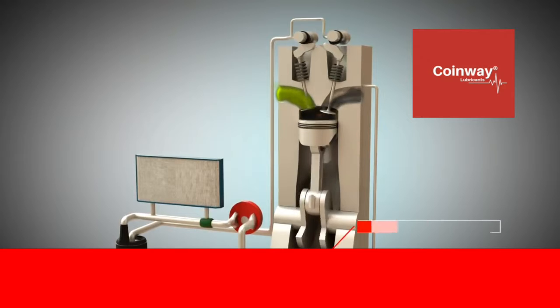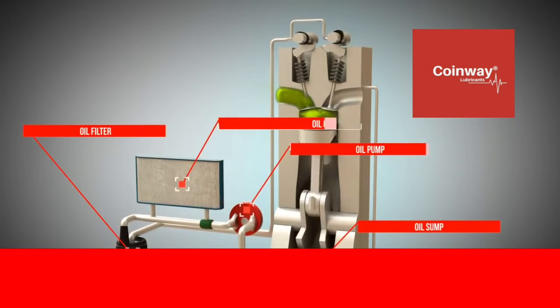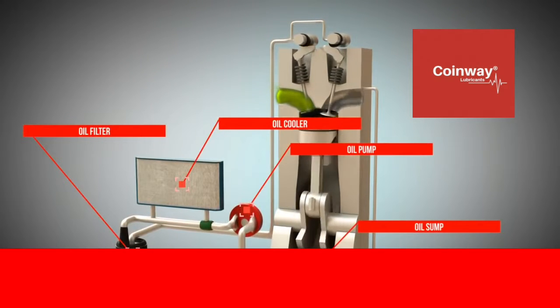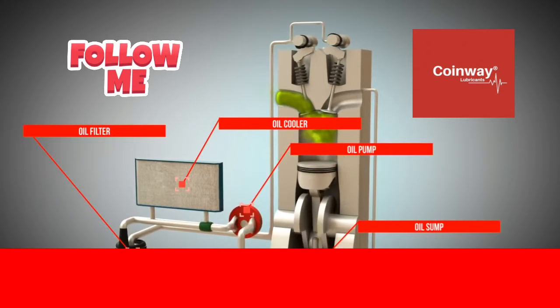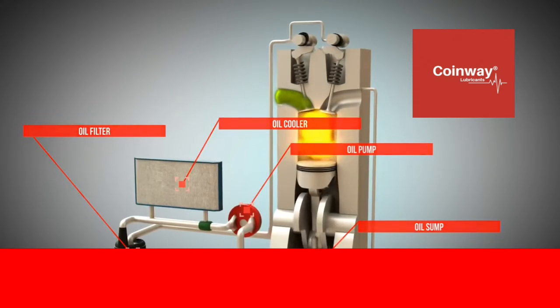Oil is primarily used to reduce friction between moving parts and dissipate heat. In this animation, we want to describe wet sump lubrication using a four-stroke engine with only one cylinder.